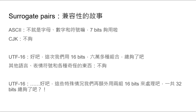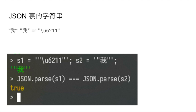那JSON裡面，JSON繼承了JavaScript，然後JavaScript和Java基本上沒有關係，但是Java是用UTF-16，JavaScript也是用UTF-16。所以JSON裡面的字符串是可以用UTF-16來做encoding的，所以例如我有一個字符串，比如「我」這個字。